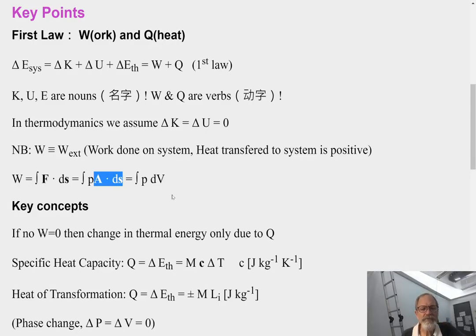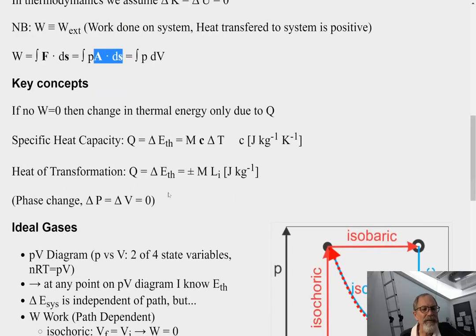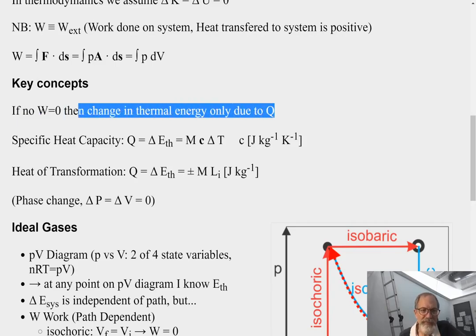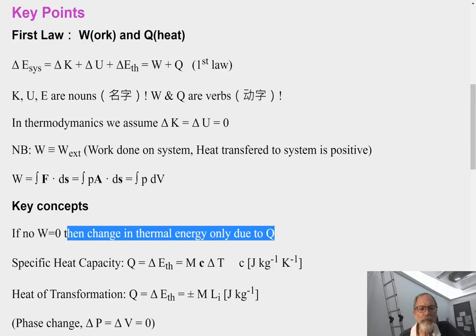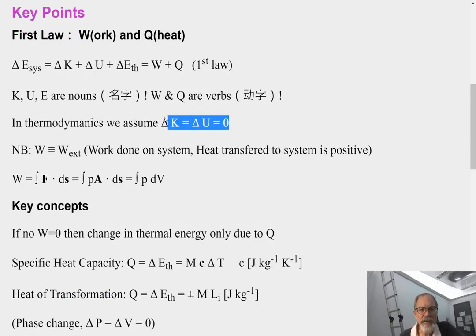Now, let's look at some key concepts here. If there is no work, if work equals zero, then the change in thermal energy is only due to heat. Makes sense, right? I've already said that in thermodynamics, we're going to assume delta U, delta K equals zero. So, these guys are zero, so all my total change in my energy system is going to be equal to the change in thermal energy. And if work is equal to zero, then the total change in thermal energy is just going to be Q.